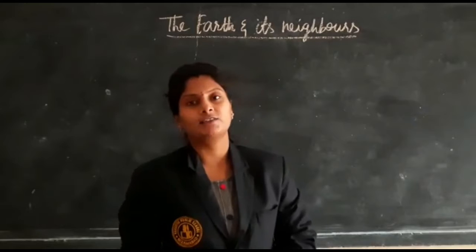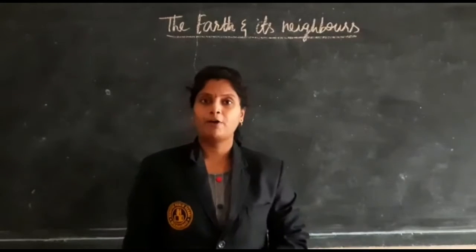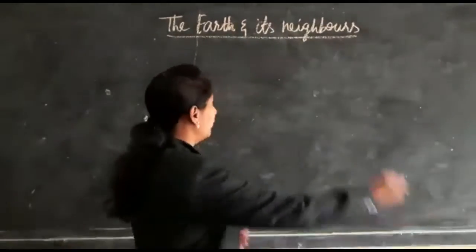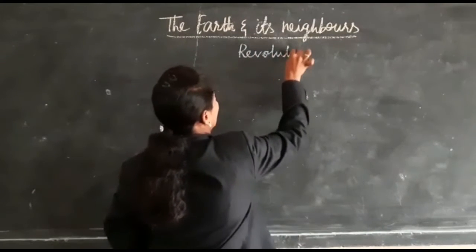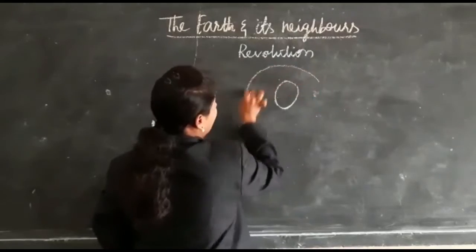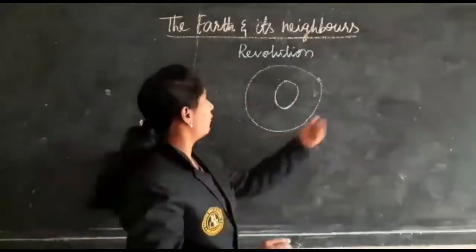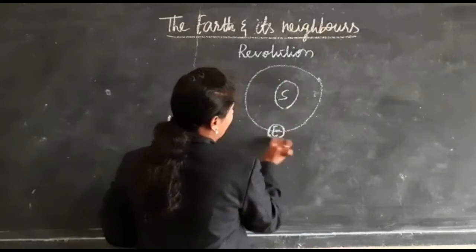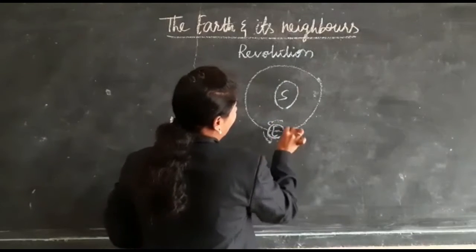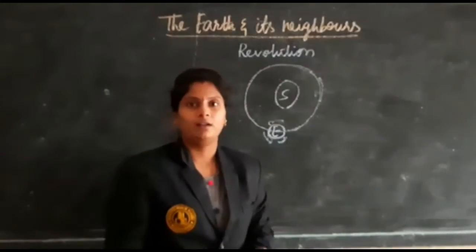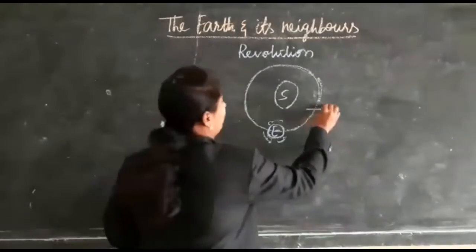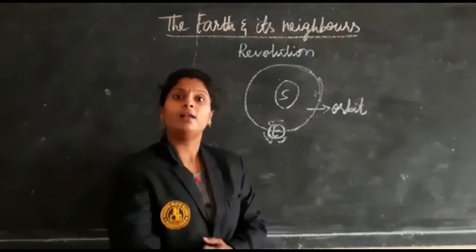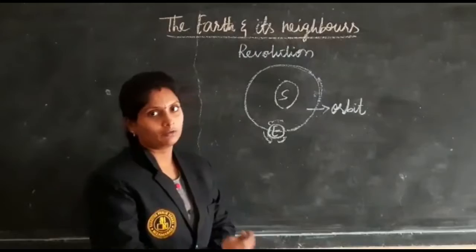In the last class we discussed about the shape of the earth, and also rotation and revolution. In revolution, the earth rotates around the sun — it rotates itself and revolves around the sun on a fixed path. That path we call it as an orbit. The earth revolves around the sun in this fixed path only.